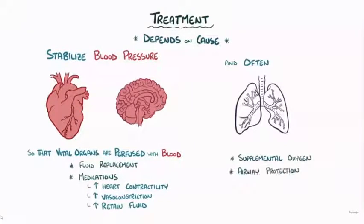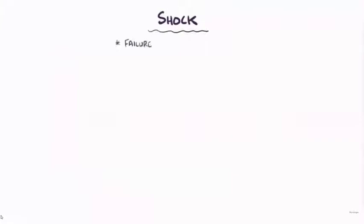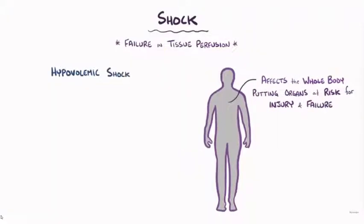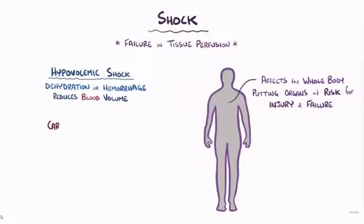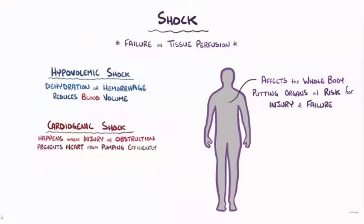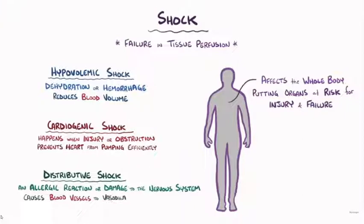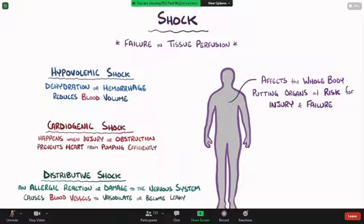As a quick recap: shock is ultimately a failure in tissue perfusion affecting the whole body, putting tissues and organs at risk for injury and ultimately organ failure. Hypovolemic shock happens when dehydration or hemorrhage reduces blood volume. Cardiogenic shock happens when a direct injury like a heart attack or an obstruction like pericardial effusion prevents the heart from pumping efficiently. Distributive shock happens when something like an allergic reaction or nervous system damage causes vasodilation and leaky blood vessels, reducing resistance and lowering blood pressure.